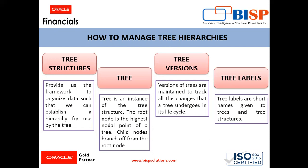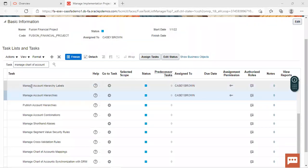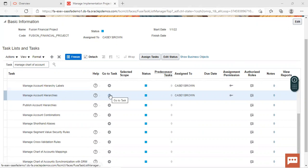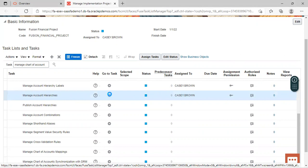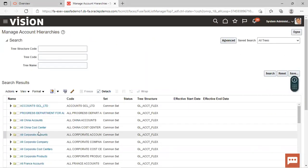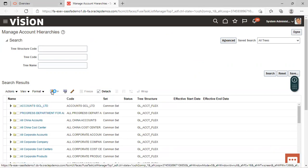We will use the file-based data import technique to import the account hierarchies into the instance. First we'll go to the task of manage account hierarchies in the tree, then upload the data using the FBDI sheets. From here we'll select the task, click on the 'Go to Task' icon, and you can see all the trees already created. To create a new one, click on the create tree icon.